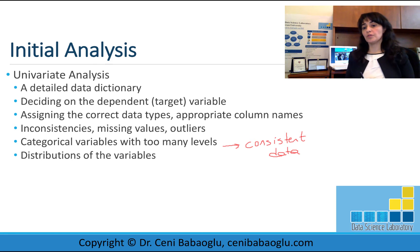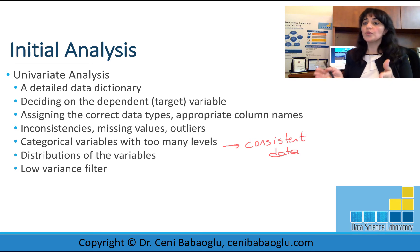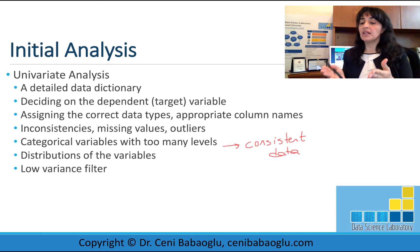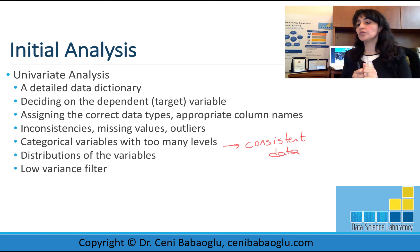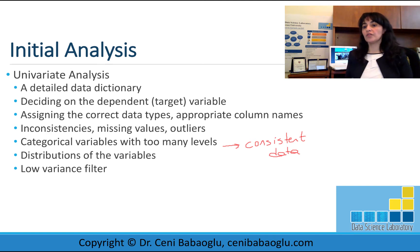Then we check the distributions of the variables — are they normally distributed? Low variance filter is another important issue to check. We may have attributes which have very low variance. For example, consider a homework grade where all students got full marks — this homework will not be able to distinguish students from one another. If we have an attribute with close to zero variance, we should identify that at this step.